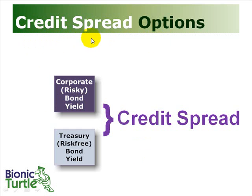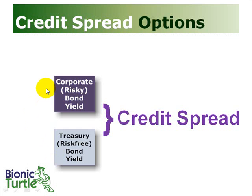To understand the credit spread option, we need a definition of credit spread, and that is the difference between a risky yield and a risk-free or riskless yield. So that could be, for example, the yield or yield to maturity on a corporate bond, which is risky, minus the yield or yield to maturity on a U.S. Treasury, which is risk-free or riskless, virtually. So that's the credit spread.